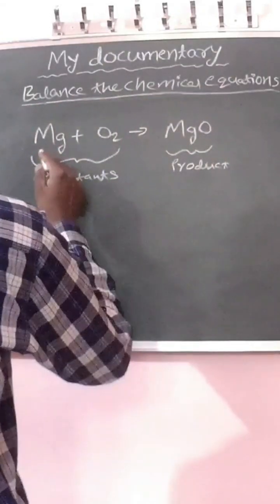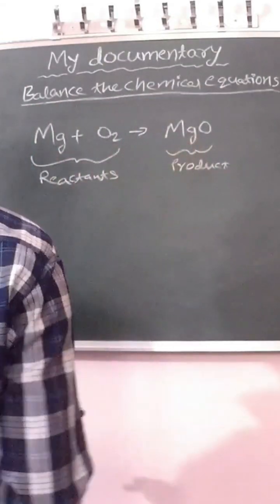Balance the chemical equation. Mg plus O2 gives us MgO. See here,